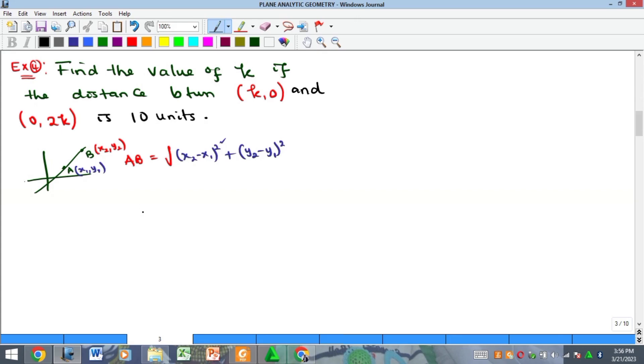So now this is an example, a problem we have to solve, which is an application of this concept. It says that we should find the value of k if the distance between this point and this point—you know whenever you have these two coordinates, he's talking about a point in the Cartesian plane. And so he's saying we should find the value of k if the distance between these two points is 10.